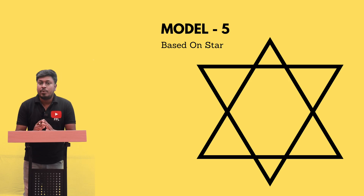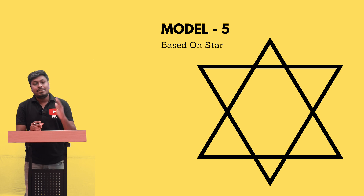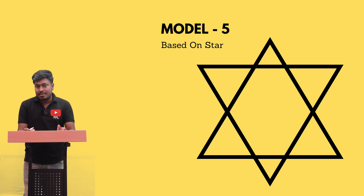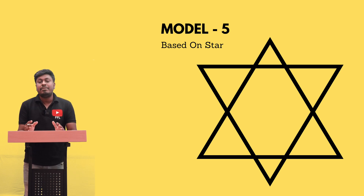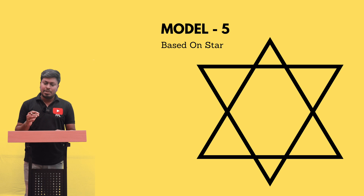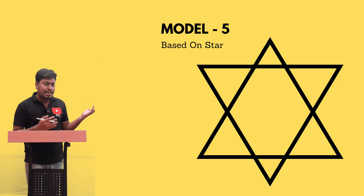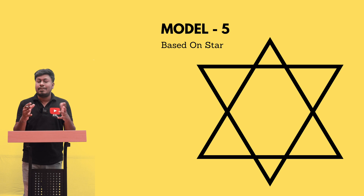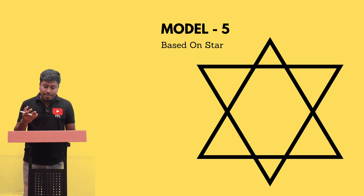Thanks for being here in my YouTube channel. In this lesson number six, the topic is how many triangles are there in the given figure. We are going to solve some questions from model number five. The diagram looks like a star, and based on the star our target is to find how many triangles are there in the given figure.